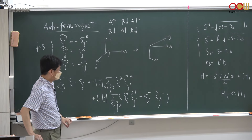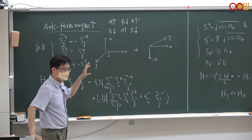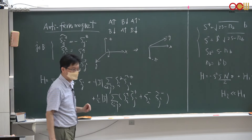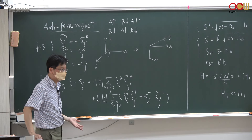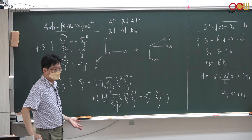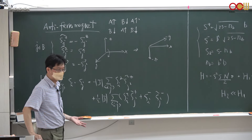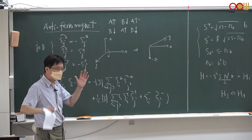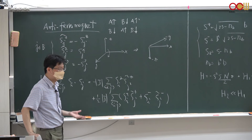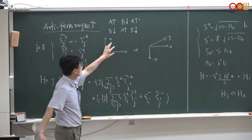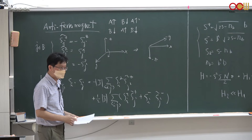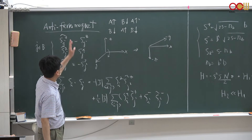If you look at each sublattice individually, you'll see that each of the two sublattices has spins always pointing in the same direction, meaning they are all ferromagnets. But if you combine these two ferromagnets in such a way that the two different sublattices show opposite spin orientations, then this is the antiferromagnet.